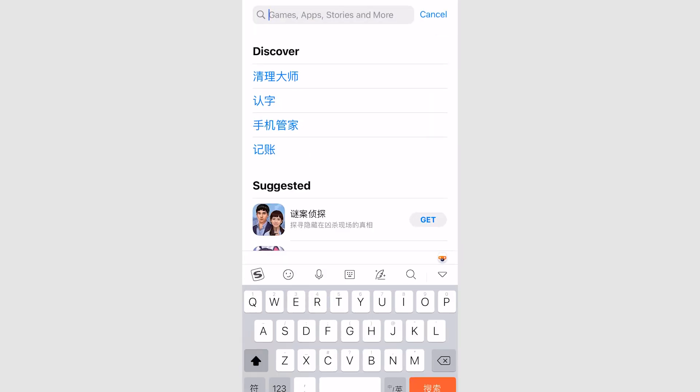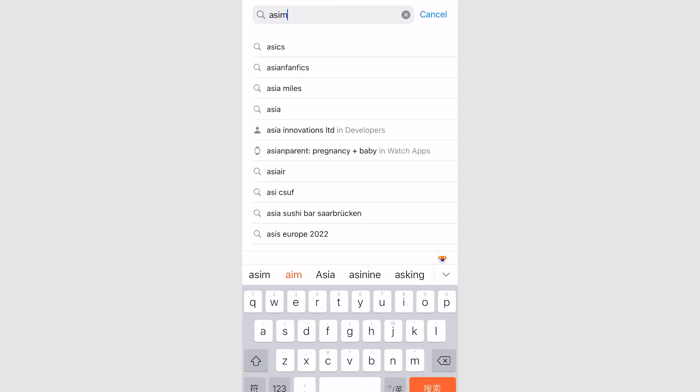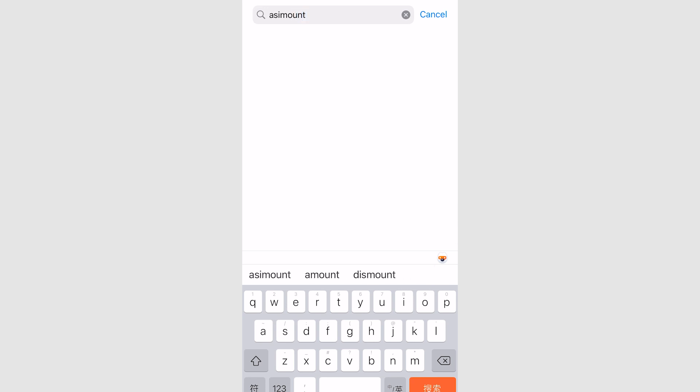Connect the mount to the ASIMount app to automatically synchronize time and coordinates. The ASIMount app is available on the App Store and the Google Play Store. Scanning the QR code on the AM5 Equatorial Mount's packaging will also redirect you to the app's download page.